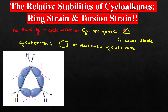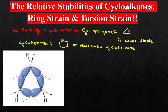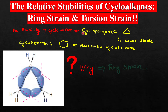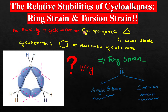Let's start with the simplest cycloalkane, called cyclopropane. Cyclopropane is a three-membered ring and is said to be the least stable cycloalkane. On the other hand, cyclohexane is the most stable cycloalkane. The question is: why is cyclopropane the least stable? To understand it, you have to understand ring strain and torsional strain.